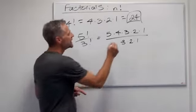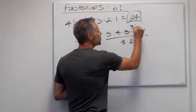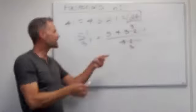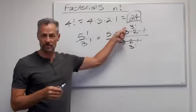But notice something. This up here is 3 factorial. This down here was 3 factorial. So I don't need to write all that out. I can just write 5 times 4 times 3 factorial.